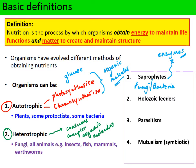Holozoic feeders have to ingest complex organic molecules and then digest them in a very specialized internal digestive system. Our digestive system as holozoic feeders includes the esophagus, the stomach, the small intestine, and the large intestine.